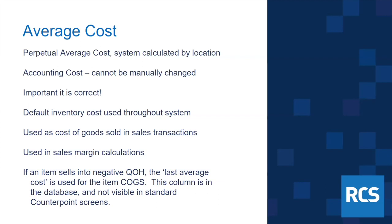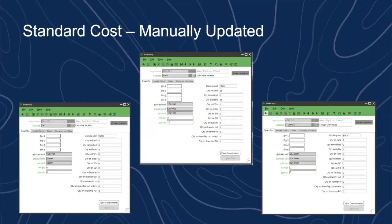If an item sells into the negative, there's a hidden field in the CounterPoint database called last average cost. That last average cost is used for the item's cost of goods sold when selling into negative quantity. When you then receive into the positive, a correction is made — which I'll cover shortly. Average cost is the most important cost in the system.